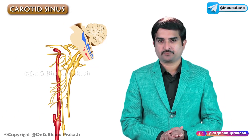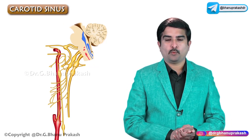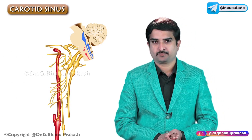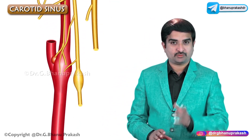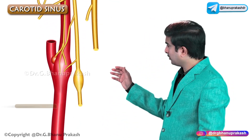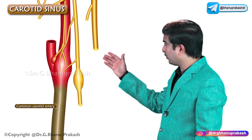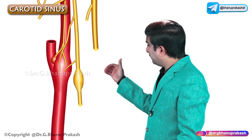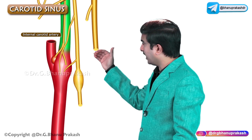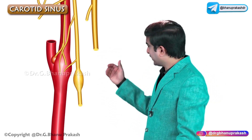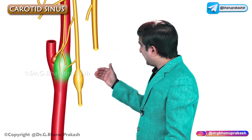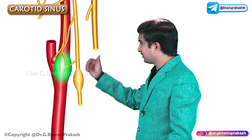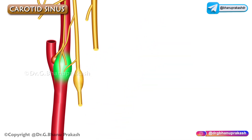Where exactly is the carotid sinus located? The carotid sinus is seen at the termination of the common carotid artery, or we can say the beginning of the internal carotid artery, where you can see a slight dilation which is known as the carotid sinus.